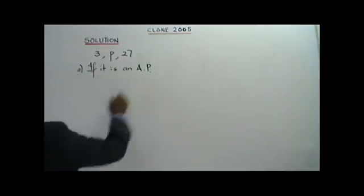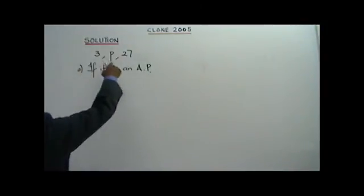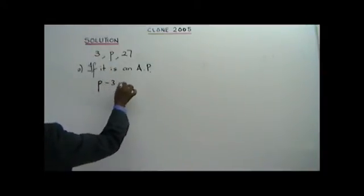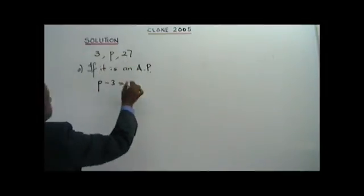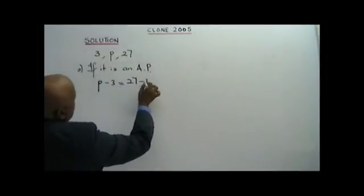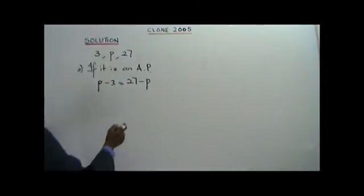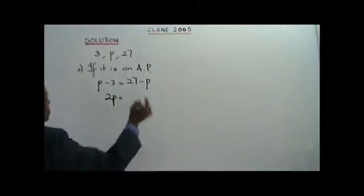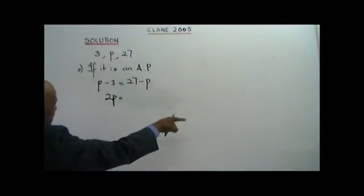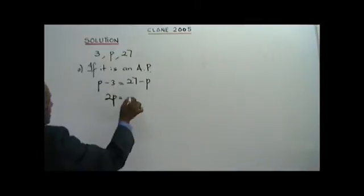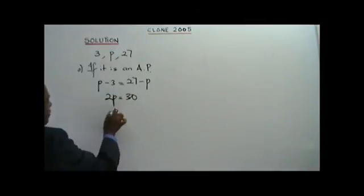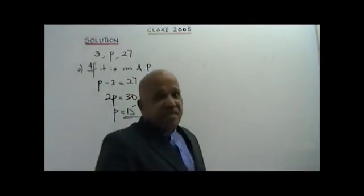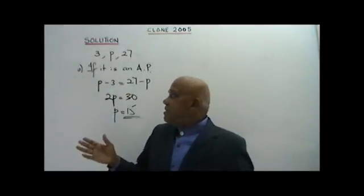If it is an AP: P minus 3 equals 27 minus P. Right minus left equals right minus left. Bringing negative P to this side: P plus P equals 2P. And bringing negative 3 to the other side: 27 plus 3 equals 30. Therefore P equals 15. Very very easy, very simple.